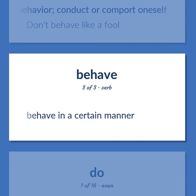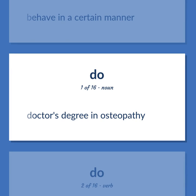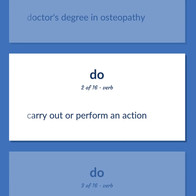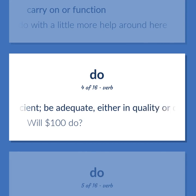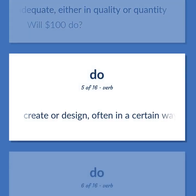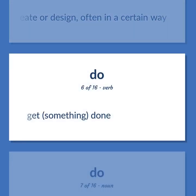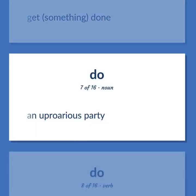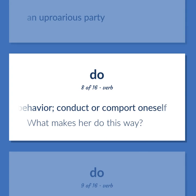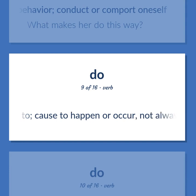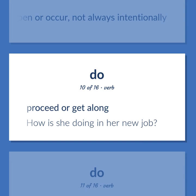Behave in a certain manner. DO. Doctor's degree in osteopathy. Carry out or perform an action. Carry on or function. We could do with a little more help around here. Be sufficient; be adequate, either in quality or quantity. Will $100 do? Create or design, often in a certain way. Get something done. An uproarious party. Behave in a certain manner; show a certain behavior; conduct or comport oneself. What makes her do this way? Give rise to; cause to happen or occur, not always intentionally.